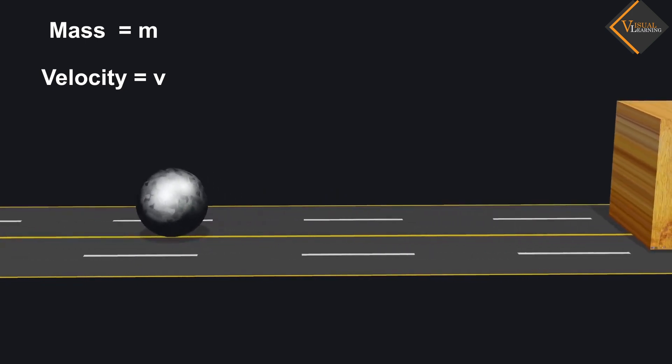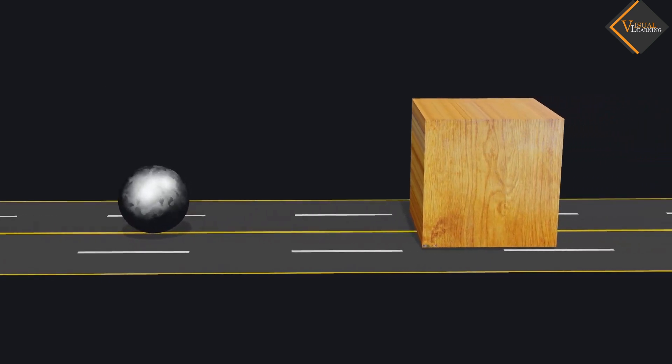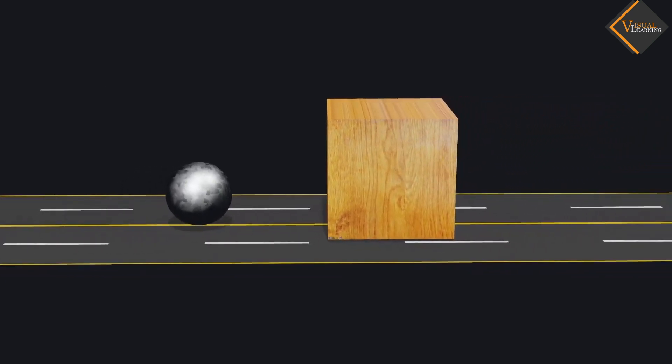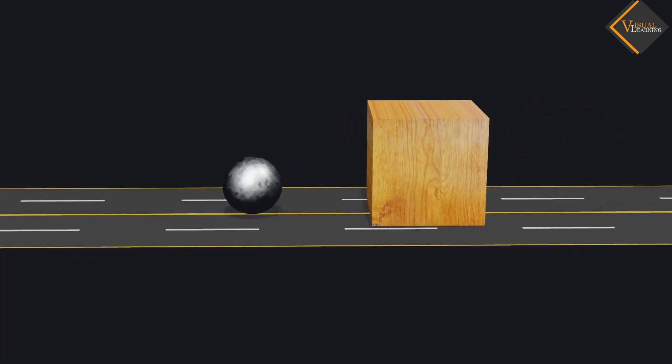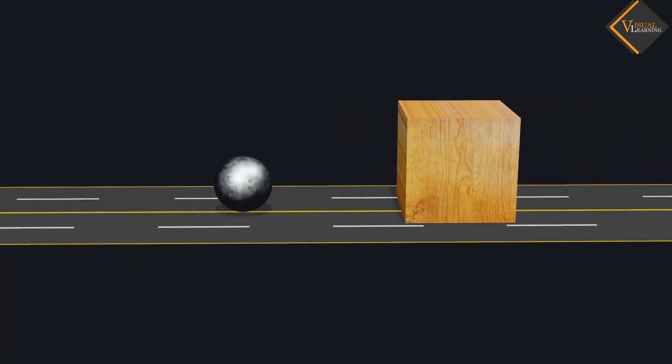In the path of this ball, a wooden block is placed. When this ball hits the wooden block, it stops, and the wooden block gets displaced by a certain distance.